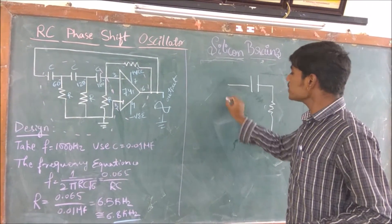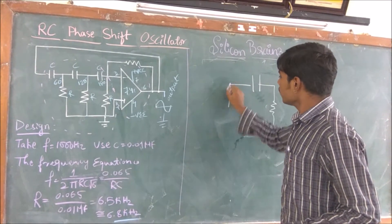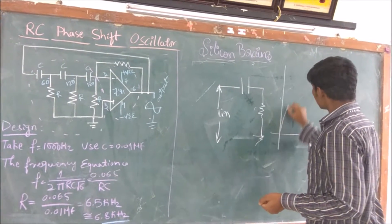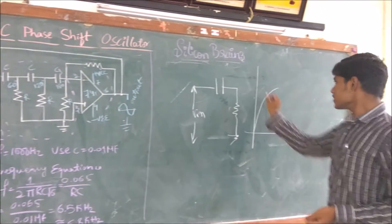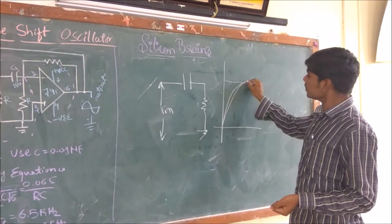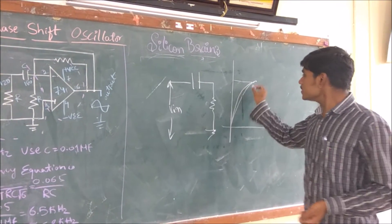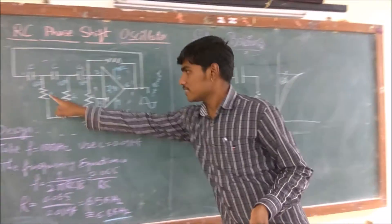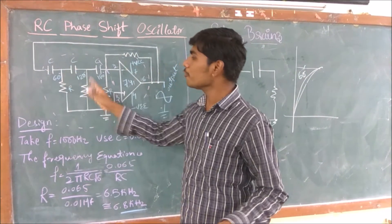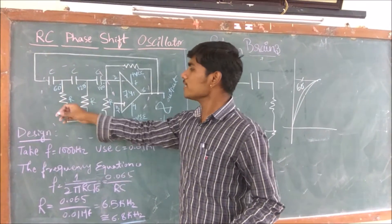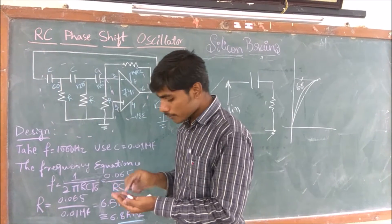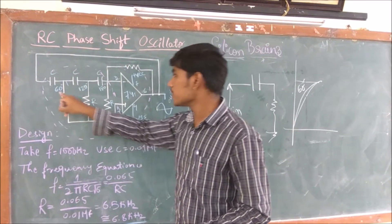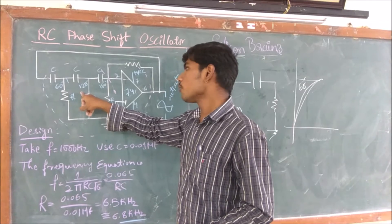What happens with the capacitor: if you apply a certain voltage, the capacitor starts charging, which causes some phase change. Each RC section produces a 60-degree phase change. We have used three such sections — each arm changes 60 degrees of phase, so the first is 60 degrees, the second is 120 degrees.